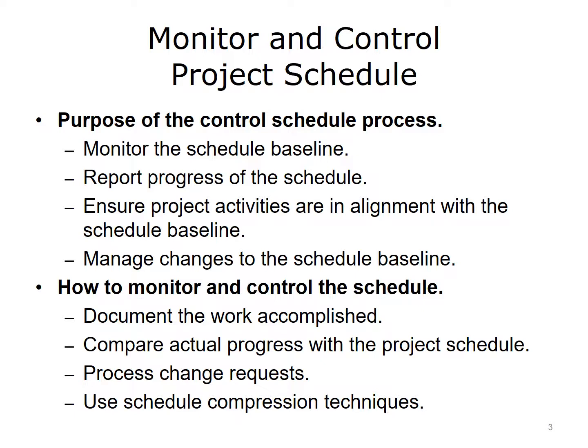If variances are detected and considered significant, you have to decide which corrective or preventive actions to take. Corrective actions may include bringing in more resources, also known as crashing, and doing more work in parallel, which is usually referred to as fast tracking. These techniques may increase project costs and project risks. Preventive actions are recommended changes to the system or process that will prevent future schedule variances.